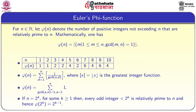For example, when n = 1, φ(1) = 1. When n = 2, φ(2) = 1, because the only number relatively prime to 2 is 1. For n = 3, φ(3) = 2. For n = 7, φ(7) = 6, because the numbers relatively prime to 7 are 1, 2, 3, 4, 5, and 6. φ(8) = 4, because the numbers relatively prime to 8 are 1, 3, 5, and 7. Similarly, φ(10) = 4.